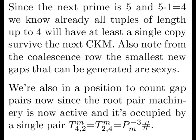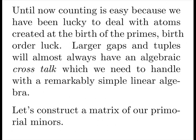We're also in a position to count gap pairs, since the root pair machinery is now active. That is, our third minor primorial now makes sense. It's 1. And it's occupied by a single pair, 4, 2, and 2, 4. Until now, counting is easy, because we've been lucky to deal with atoms created at the birth of the primes. Just birth order luck. Larger gaps in tuple will almost always have an algebraic crosstalk, which we need to handle with a remarkably simple linear algebra.